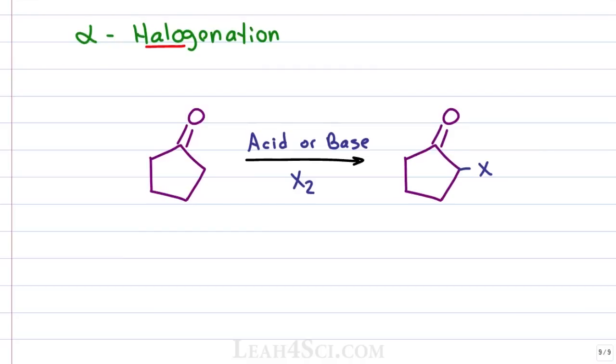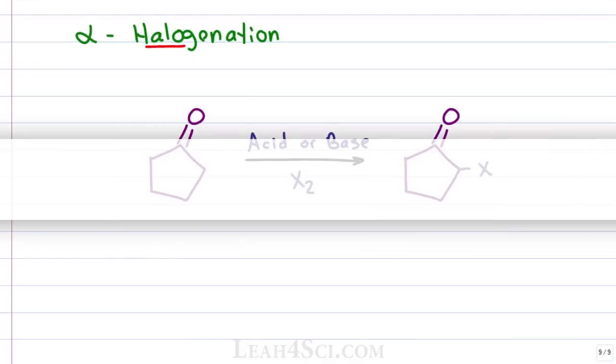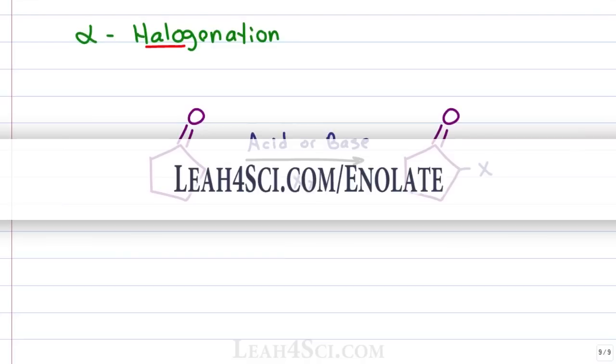This reaction is regioselective where the stability of the intermediate will help you determine the final product. The key intermediate is the enolate which we broke down in the last video, you can find that along with the practice quiz and cheat sheet on my website, Leah4Sci.com/enolate.